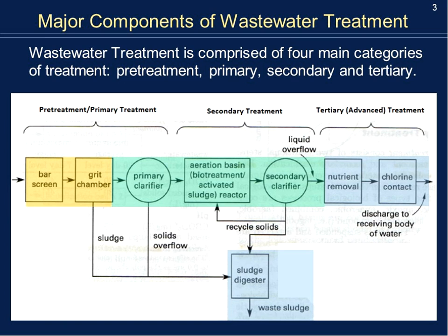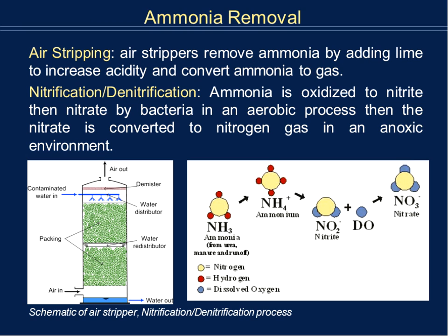Now that we've talked about clarification in advanced treatment and nutrient removal, we're going to talk about chlorine and disinfection. We mentioned the concept of air stripping: we use air to either decrease or increase acidity, and to convert different types of liquids or gases into other forms. One particular example is to convert ammonia into gas. Air comes in, the influent comes in, air is forced up through different types of media filters, and the reaction of air and water — aeration — causes the ammonia to convert to gas.